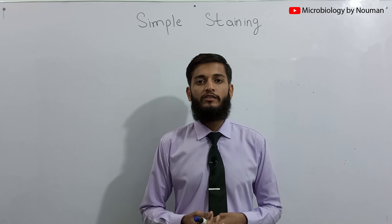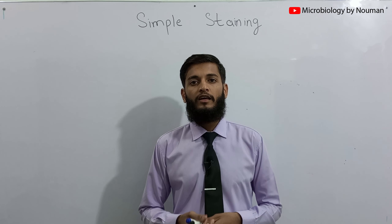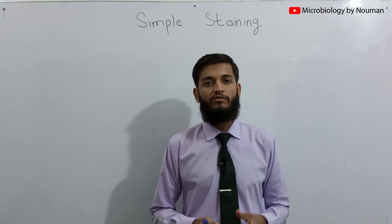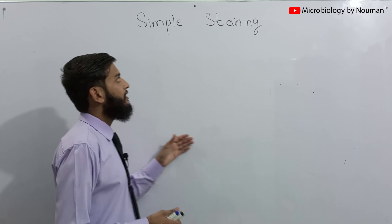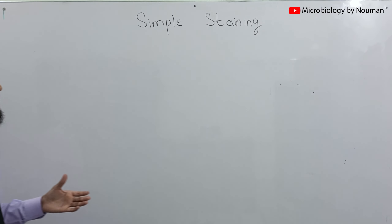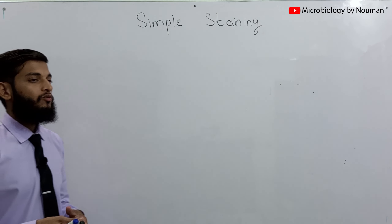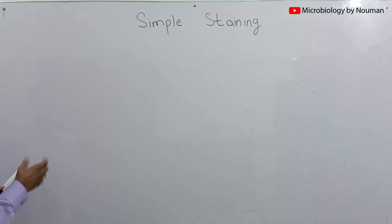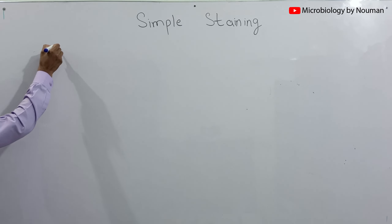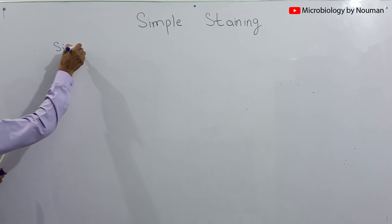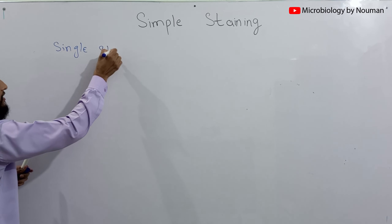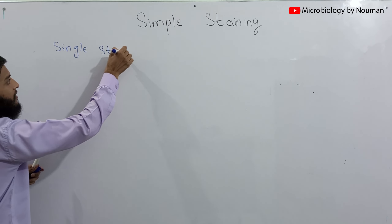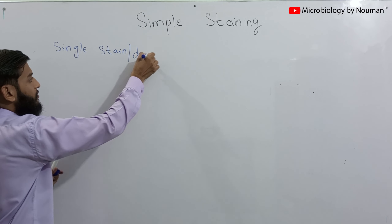Assalamu alaikum, you are watching Microbiology Bainuma. In this video we will talk about the simple staining method in microbiology. We use different types of chemicals called stains to color the bacteria, and these chemicals can be called stains or dyes. In simple staining method, we use a single stain or dye to color the bacteria.